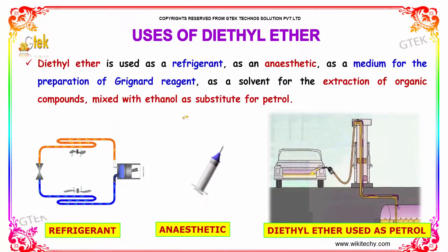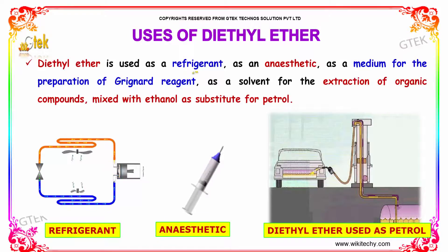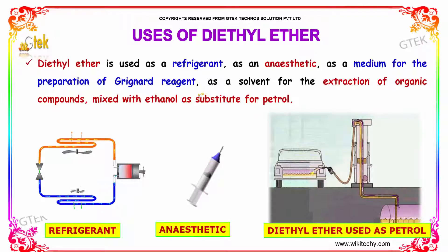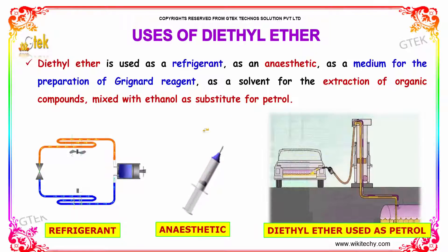Uses of diethyl ether: diethyl ether is used as a refrigerant, as an anesthetic, as a medium for the preparation of Grignard reagent, as a solvent for the extraction of organic compounds, and as a substitute for petrol.